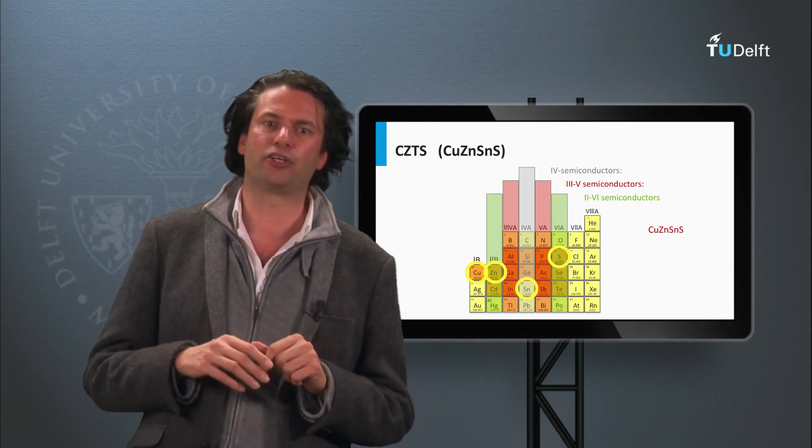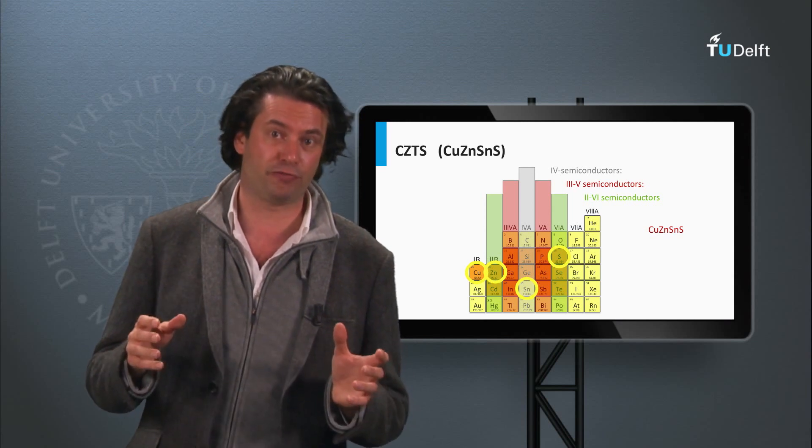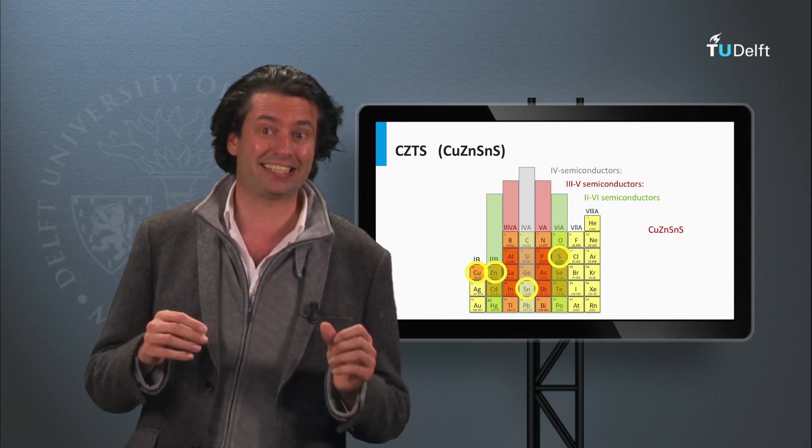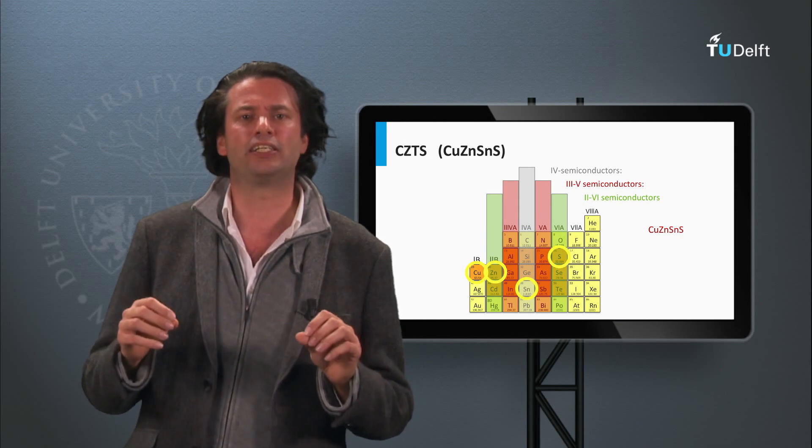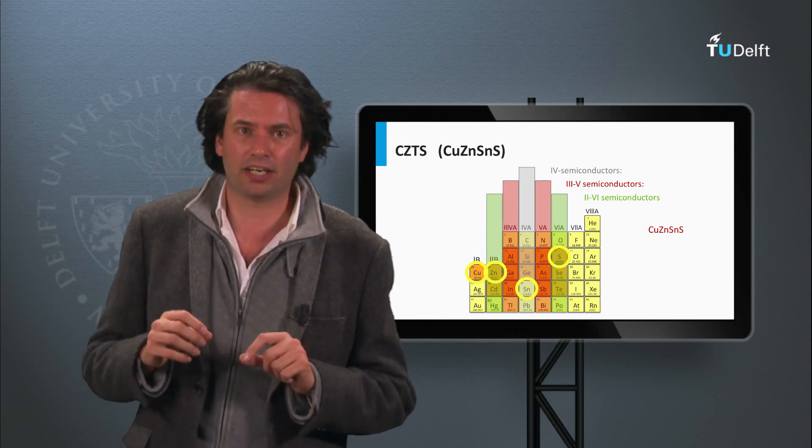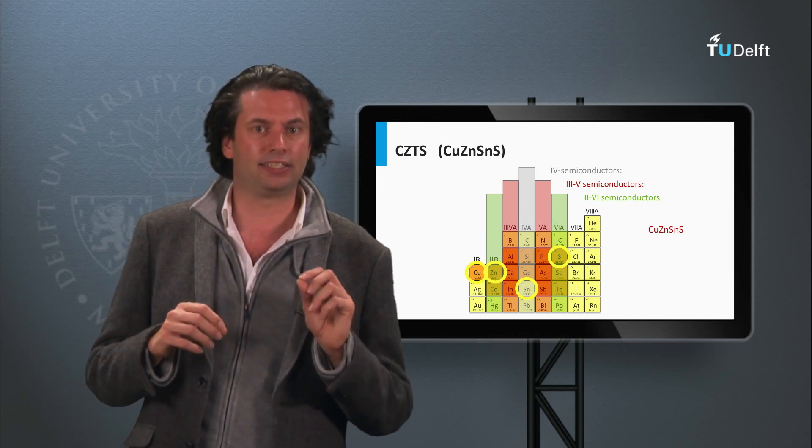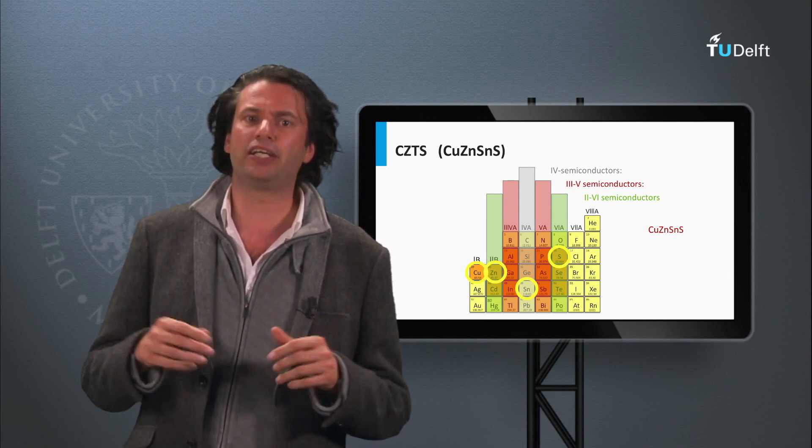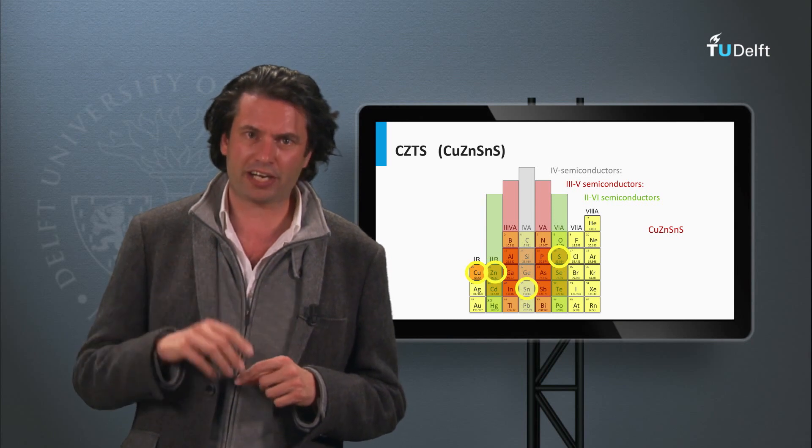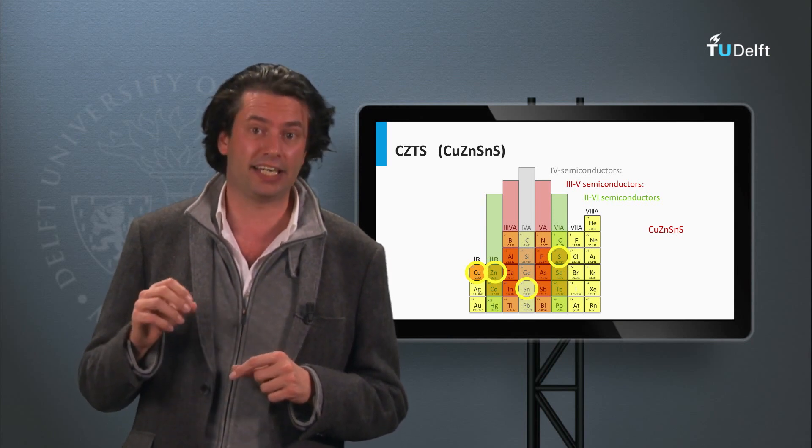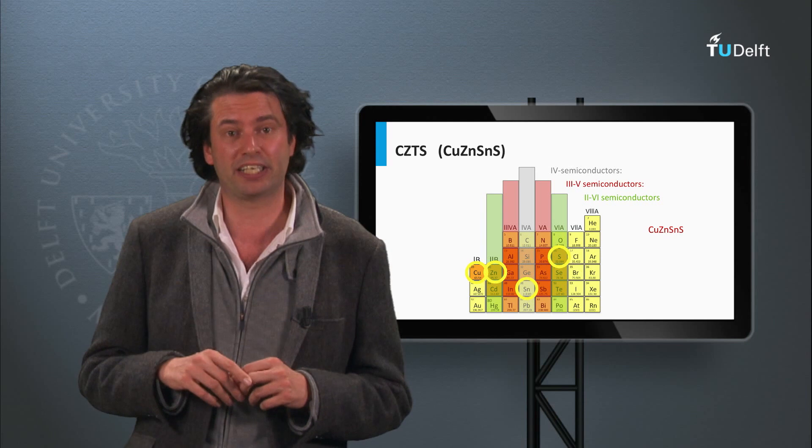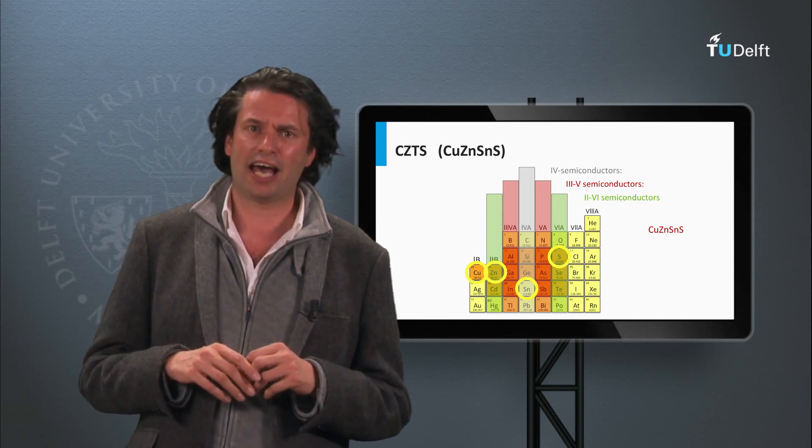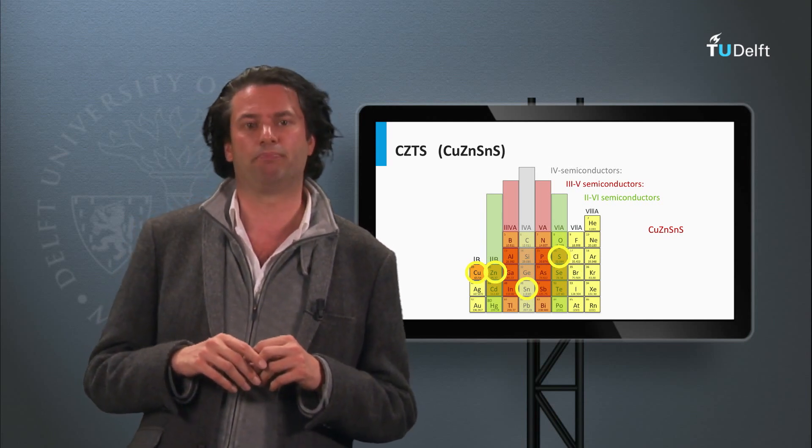Consequently, the interest in copper-zinc-tin sulfide, referred to as CZTS, is increasing to replace the CIGS absorber layer. CZTS is based on non-toxic and abundantly available elements. The current record efficiencies of CZTS solar cells on lab scale is around 11%, as achieved by IBM.